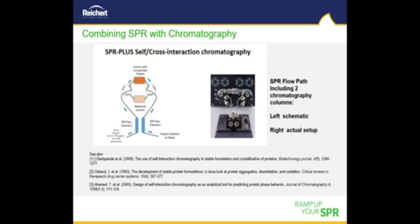In this schematic, two microcolumns are integrated between the flow channels of our two-channel SPR system via our extended valve module. These serve as reference (no protein) and interaction (monoclonal antibody, or MAb-activated) columns. The signal on the first SPR channel serves as a control for possible variations of back pressure or packing density of the two columns. The second channel downstream of the columns registers the retention time differences between the two columns.